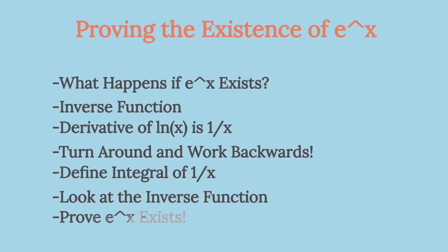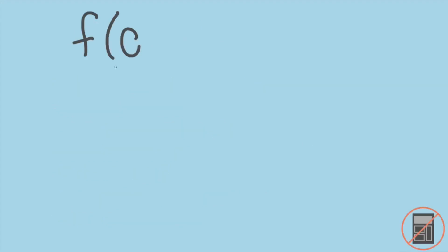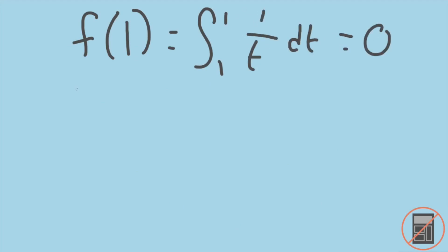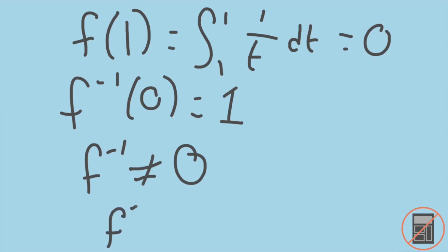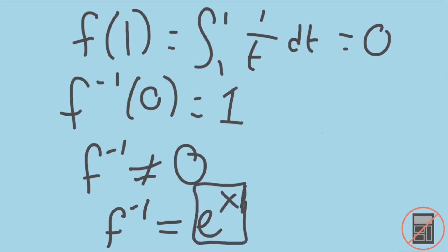Finally, we'll use this information to prove that e to the x exists. Notice that f of 1 equals the integral from 1 to 1 of 1 over t dt, which equals 0. So the inverse function of 0 equals 1. In particular, that means our inverse function is not the zero function. Therefore, this function must be an exponential function, which we'll call e to the x. We have proven that there is a function e to the x that is non-zero, is equal to its own derivative, and furthermore that e is greater than 1.